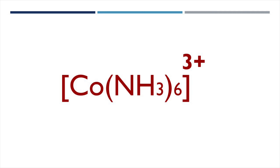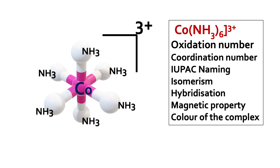Welcome to Aurora Chemistry for Everyone. We are here to discuss complete detailed information about the coordination complex ion [Co(NH3)6]³⁺ — including oxidation number, coordination number, IUPAC naming, isomerism, hybridization, magnetic property, and color of the complex.